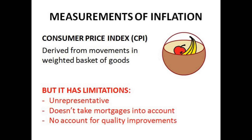Inflation is usually measured with the CPI, the Consumer Price Index, which doesn't include house prices. If we want to include house prices in terms of inflation, that's the RPI. The CPI is essentially measured using a basket of goods containing goods that lots of different households buy, and we look at the movements in these prices over a 12-month period. Weighting means that if people buy lots of tea and not very much sugar, then tea will be given a higher proportion of the weighting, so changes in tea will show up as more significant than changes in the price of sugar.